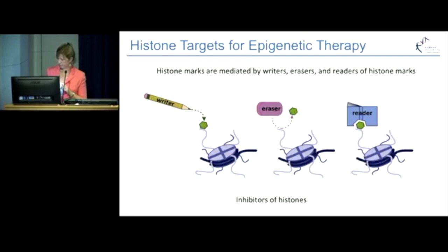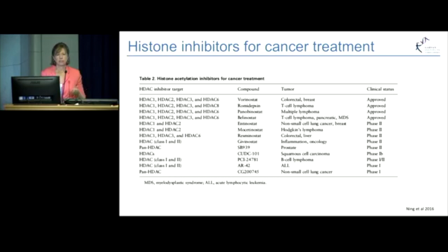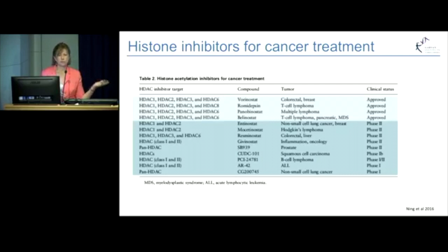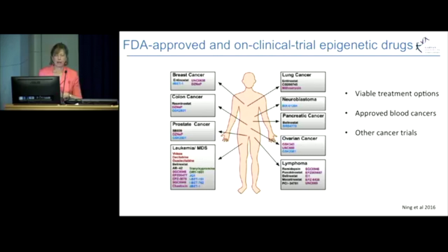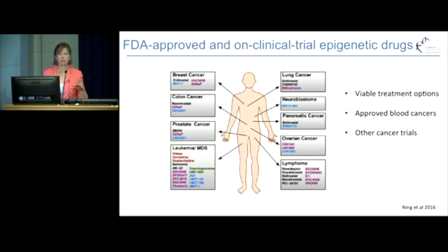This large table gives you an idea of histone inhibitors being used for cancer treatment. The top drugs highlighted have been approved for treatment, primarily in the leukemias and blood cancers, but there are also examples where these drugs are being used for other cancers. There is an enormous number of drugs still coming through in phase 1 and phase 2 clinical trials, reflecting what is happening around the world across different cancer types at different stages — phase 1, phase 2, and phase 3 — with these different epigenetic therapies.